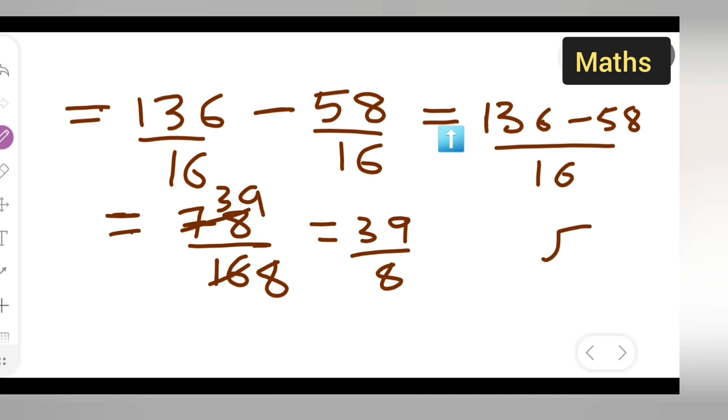Now divide: 8 into 39. 8 times 3 is 24, 8 times 4 is 32. Subtract it. 9 minus 2 gives 7. Now, this is your quotient, this is your remainder, and this is your dividend. So you write in this form: quotient remainder upon dividend.